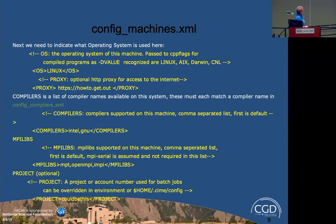You need to specify the operating system. Options include Linux, AIX — though I haven't seen an AIX system in four or five years, so I'm not sure it even works anymore — Darwin for Mac OS, and CNL, which is a Cray variant of the operating system.